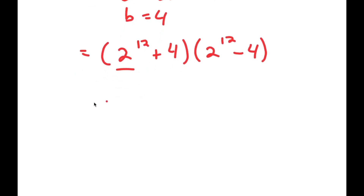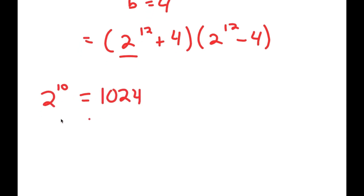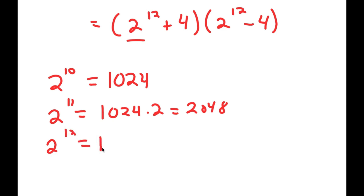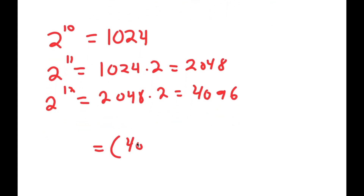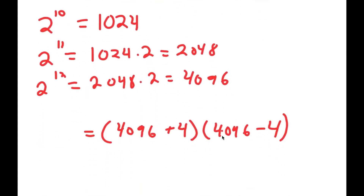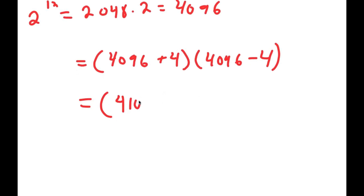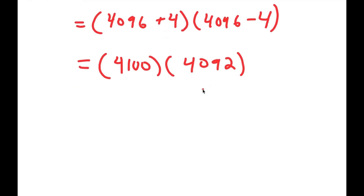Now, 2 to the power of 12: we know 2 to the power of 10 is 1024, so 2 to the power of 11 is 2048, and 2 to the power of 12 is 4096. So I get 4096 plus 4 times 4096 minus 4, which is 4100 times 4092.